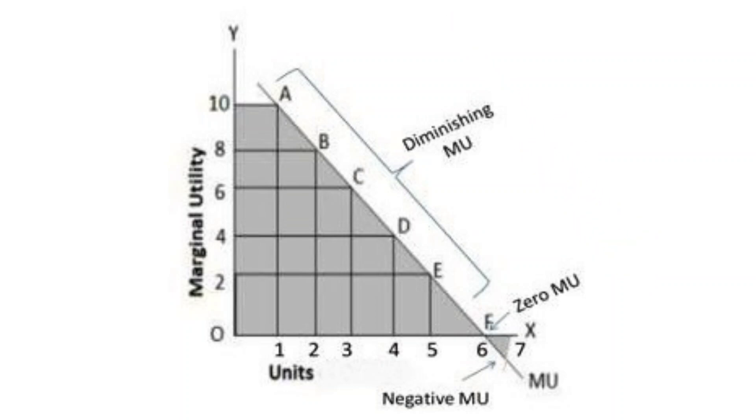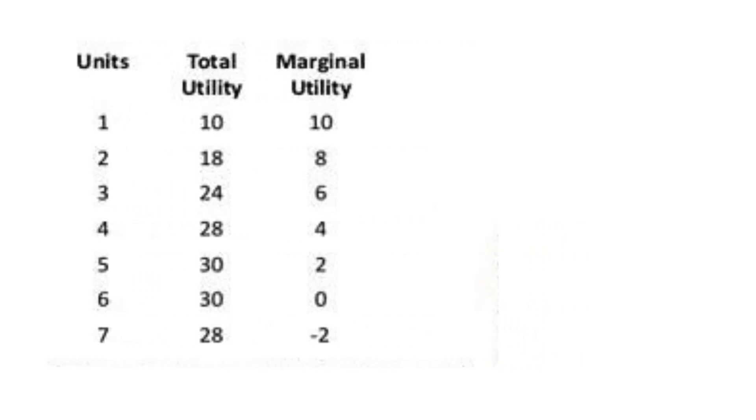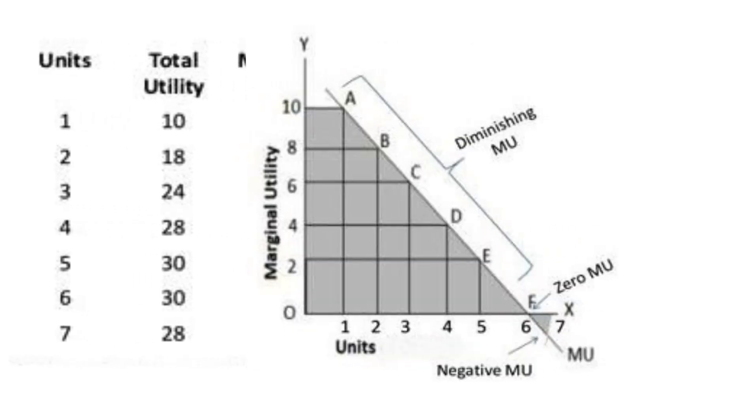According to this law, the marginal utility of each unit of any good depends on its quantity available to a person. We can illustrate the law in the form of a table or graph.